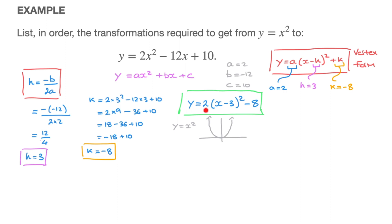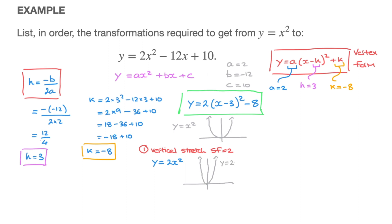As we read this parabola's equation in vertex form, the first transformation we come across is the 2 that's multiplying the pair of parentheses. This corresponds to a vertical stretch with a scale factor of 2. Step 1 is a vertical stretch with scale factor equal to 2. At that stage, the parabola's equation becomes y equals 2x squared — a curve very similar to the parent but stretched upwards and looking more narrow.